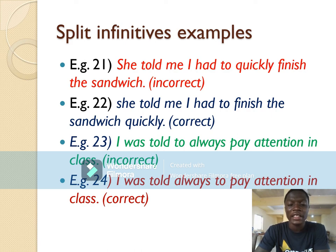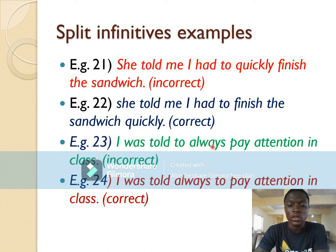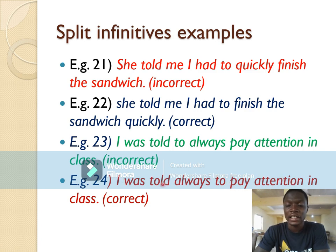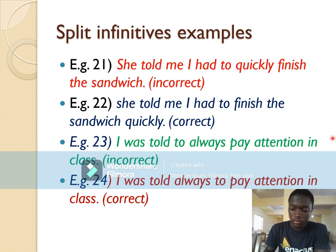Another example: 'I was told to always pay attention in class.' Here, 'always' divides 'to' and the verb 'pay.' To correct it, move 'always' before the infinitive: 'I was told always to pay attention in class.' This is the end of the first section — see you in the next section.